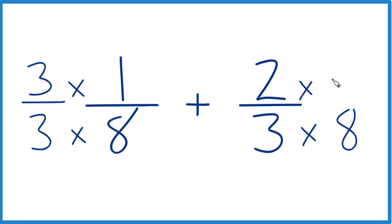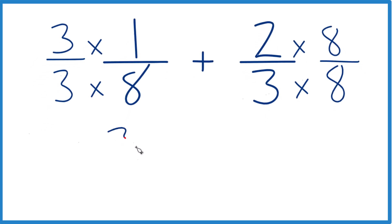Over here, let's multiply by 8, so we have 8 over 8. Now 3 times 1 is 3. 3 times 8 is 24.